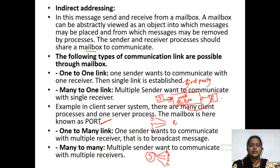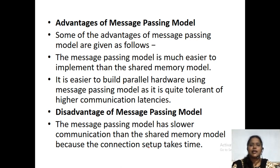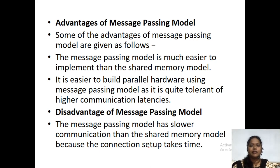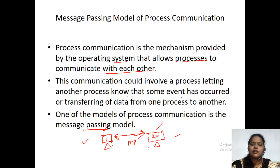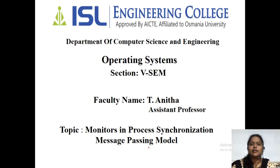Direct addressing and indirect addressing. In direct addressing: symmetric means receiver knows the destination name and destination knows the receiver's name; asymmetric means the receiver knows the destination name but the destination doesn't know the receiver name. When compared to the shared memory model, message passing is simpler, but the drawback is that providing links between sender and receiver is a bit difficult. These are the advantages and disadvantages of the message passing model.